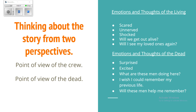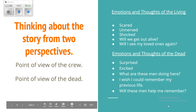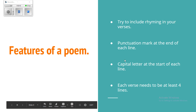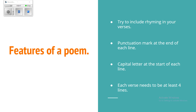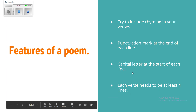From the point of view of the crew and the point of view of the dead themselves — now what are you going to do with all this information? We're going to quickly touch on the features of a poem. When you do your verse, try to include rhyming in your verses, a punctuation mark at the end of each line — very important — as well as a capital letter at the start of each line. Each verse needs to be at least four lines: four, six, or eight. I wouldn't do more than eight lines per verse, and keep it an even number so you can do rhyming couplets — each two lines combined.